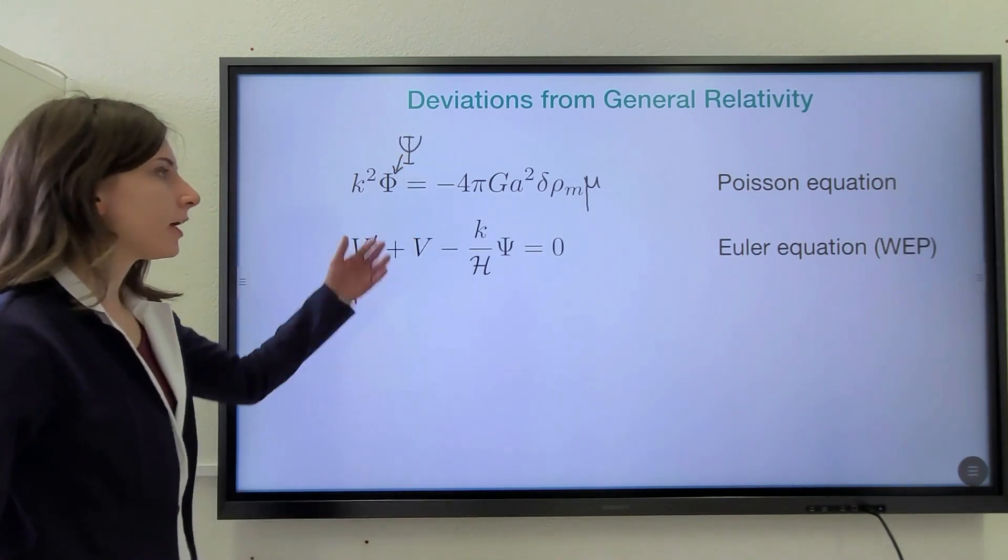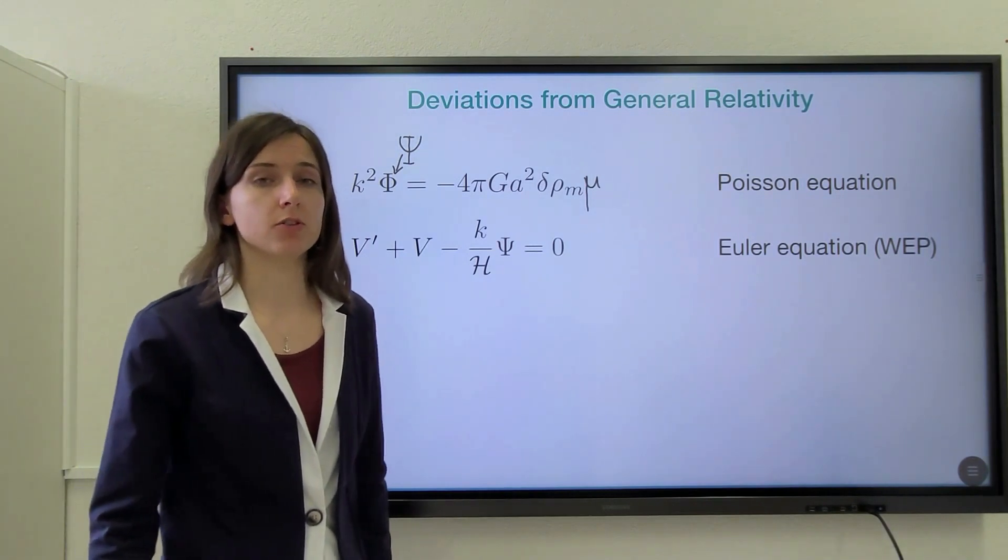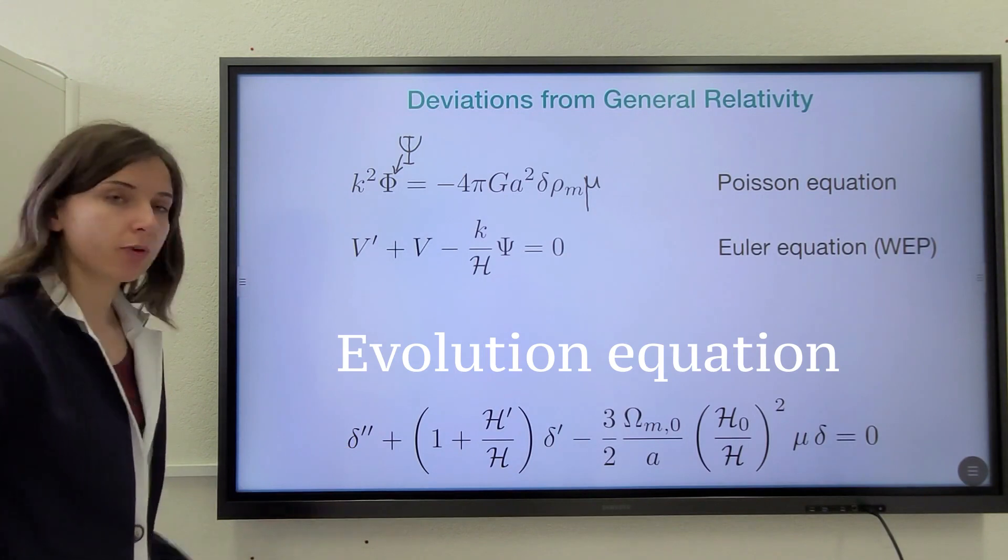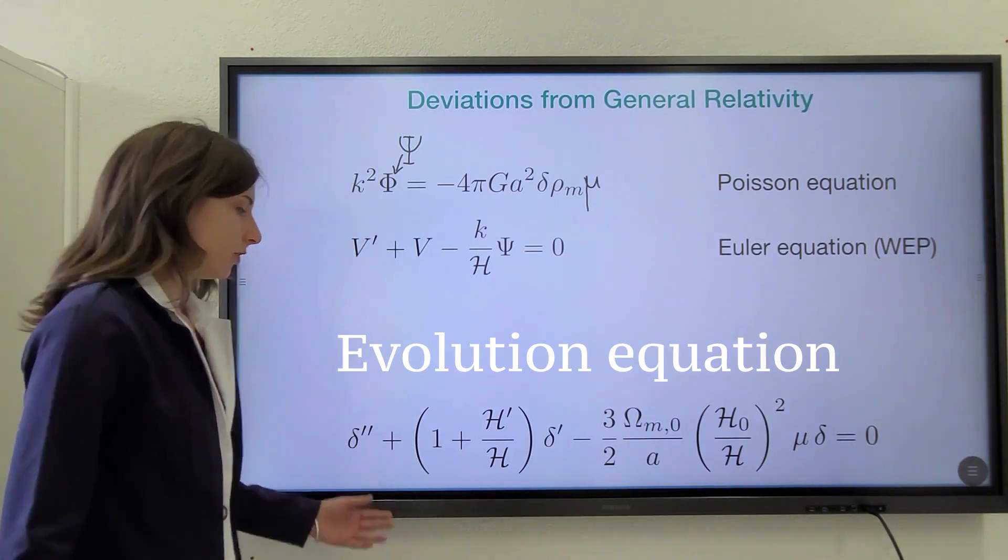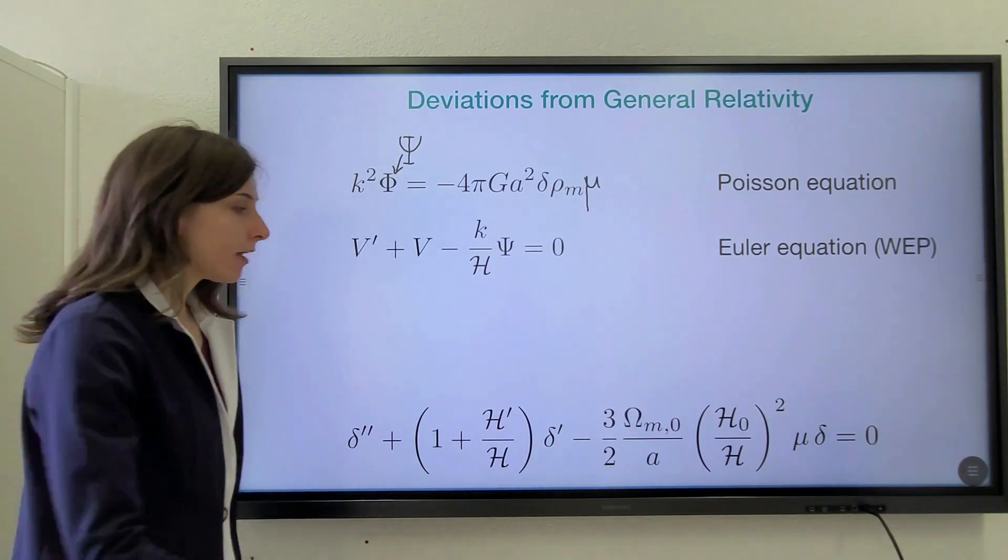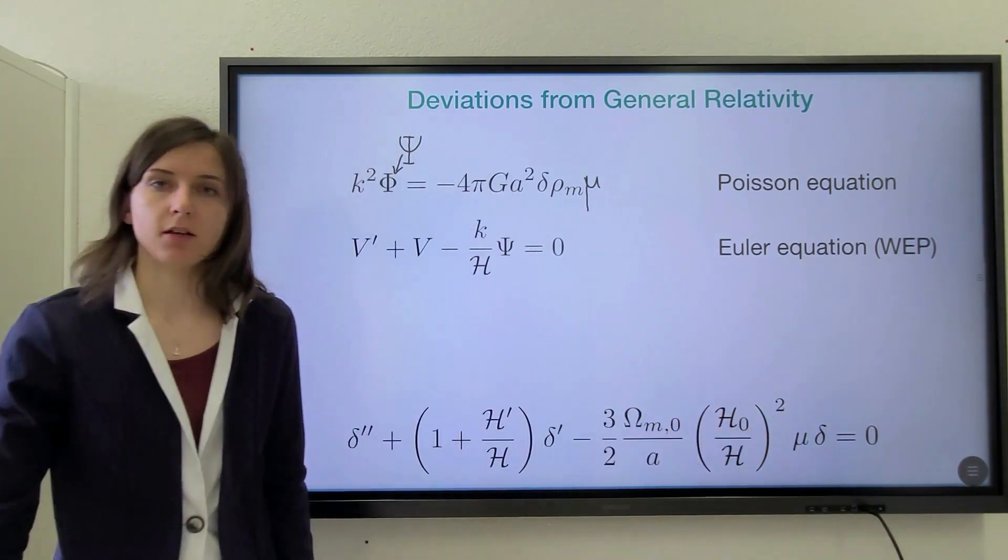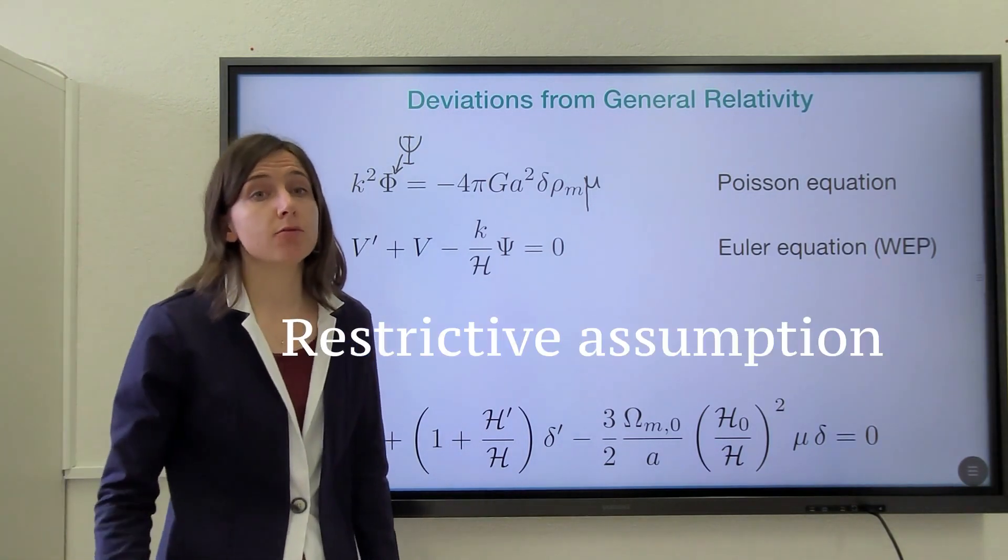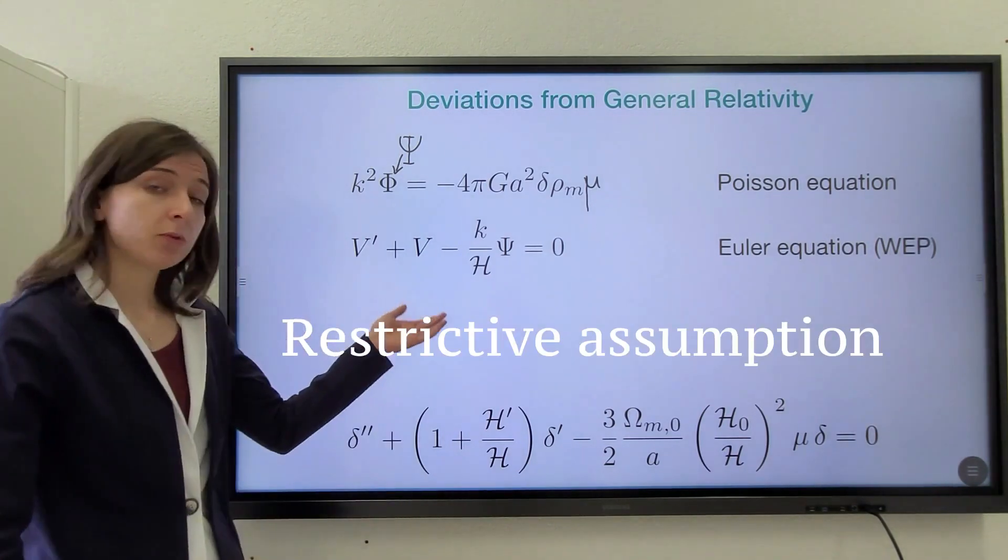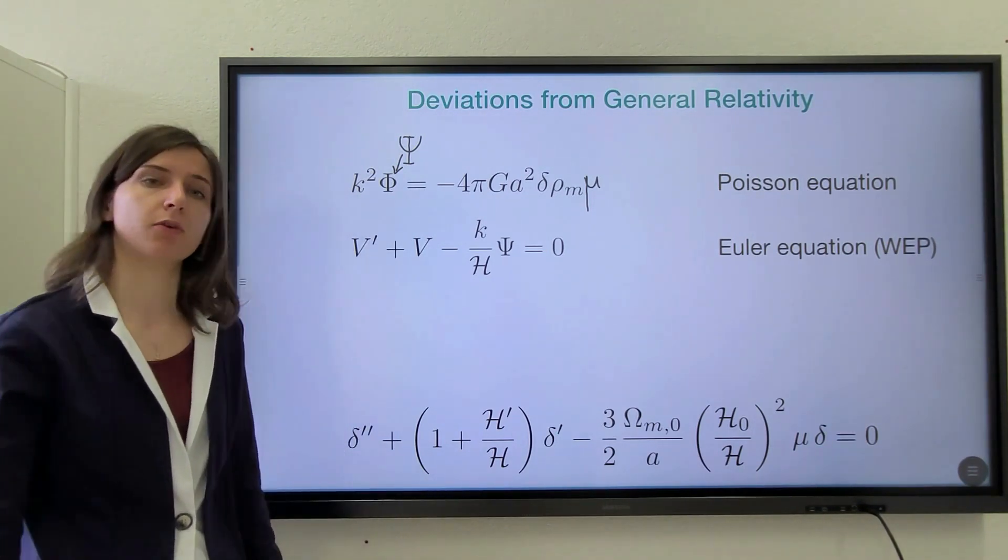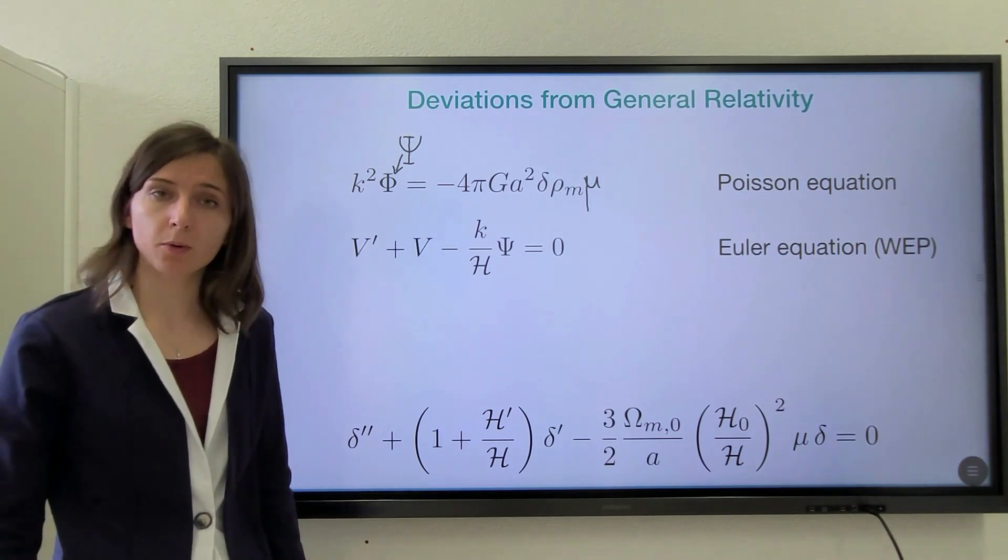Now, combining these two equations together with the continuity equation, it is possible to derive an evolution equation for the matter density fluctuation delta. And we notice that the modification mu clearly enters the last term in this equation. However, in this derivation, we have made the very restrictive assumption that the WEP is valid. And this is actually an assumption that has not been tested for the unknown dark matter component.